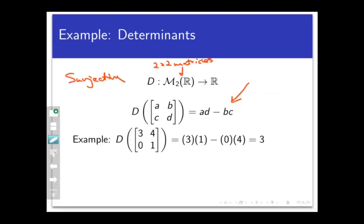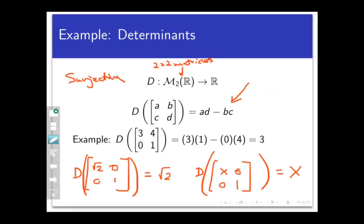For example, if you chose the number square root of 2 from the codomain, one matrix that maps to it is the matrix square root of 2, 0, 0, 1. There are a lot more matrices that map to this number too, of course. For example, 1, 0, 0, square root of 2. But the point is that there is at least one matrix that does actually hit the target. You can generalize this to any point in the codomain. If we let x be any real number, then the matrix x, 0, 0, 1 will map to x. So notice that if we want to prove that a function is surjective, this often involves a constructive proof. You choose the elements in the codomain, and you build the element of the domain that maps to it. We're going to talk a lot more about that in the next video.